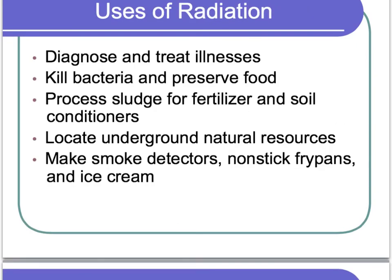Last thing we need to talk about is the uses for radiation. It can be used to diagnose and treat illnesses like chemotherapy. It can be used to kill bacteria and preserve food. It can be used to process sludge for fertilizer and soil conditioners. You can use it to locate underground natural resources. It's also used in smoke detectors, in the non-stick coating on frying pans, and it's even used to make ice cream.